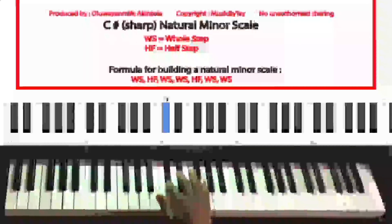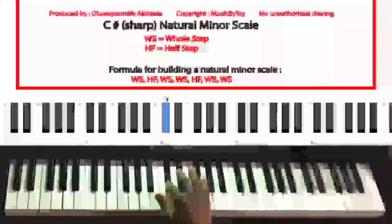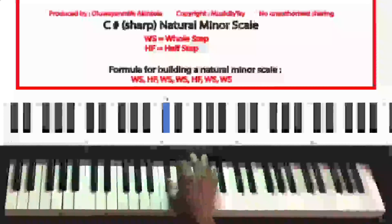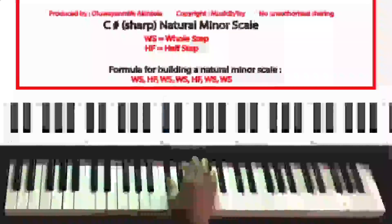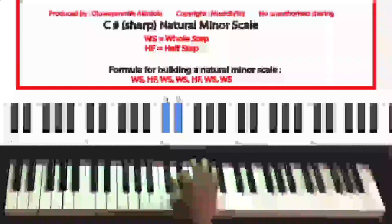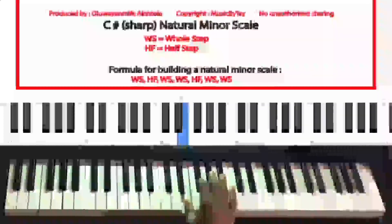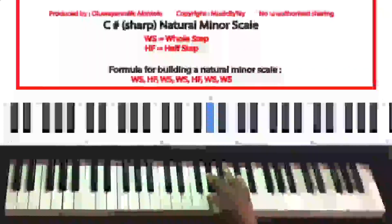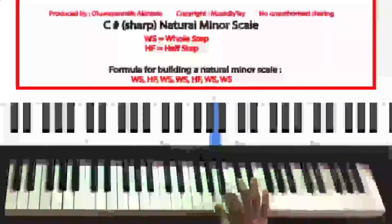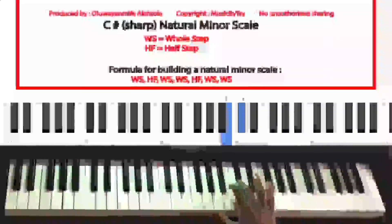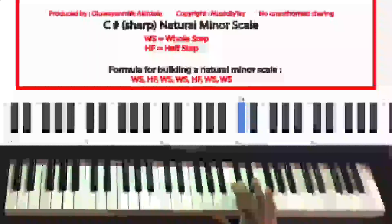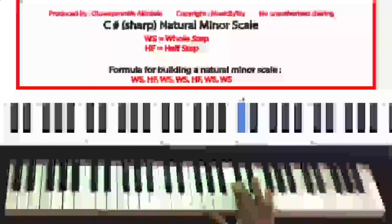So we want to construct a C sharp natural minor scale using the second method, which is using the formula. Starting from the key of C sharp, this is how the formula goes: we're going to take a whole step, then a half step, then a half step, then a half step, then a whole step, then a whole step. We got the same answer as we did using the first method. That is the C sharp natural minor scale.